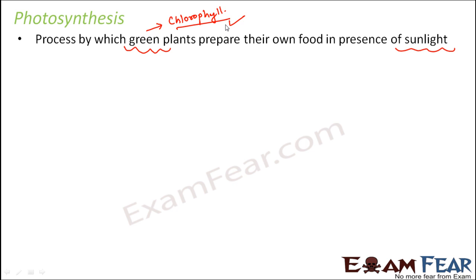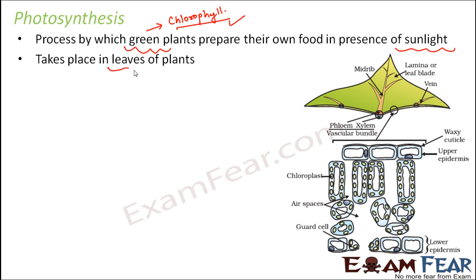So where exactly does the process of food preparation take place in a plant? A plant has different parts like roots, stem, leaves, flowers, fruits. It takes place in the leaves of the plant, and that is why leaves are also called the kitchen of the plants. Why are they called the kitchen? Because this is the place where the food is prepared. Why in the leaves? Because the color of the leaves is green. Why green? Because they contain the pigment chlorophyll.